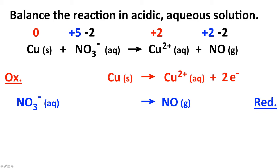Next we balance oxygens. There are three oxygens on the left from the nitrate and one from nitrogen monoxide on the right — they're out of balance. We can't use coefficients without disrupting the nitrogen balance, but since we're in aqueous solution, water can participate. Adding two water molecules to the right gives three total oxygens on the right, balancing the three oxygens on the left.